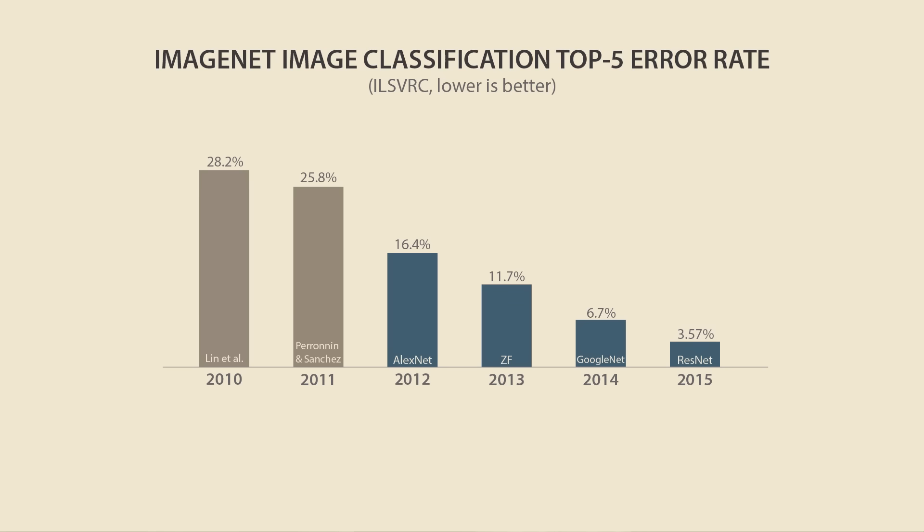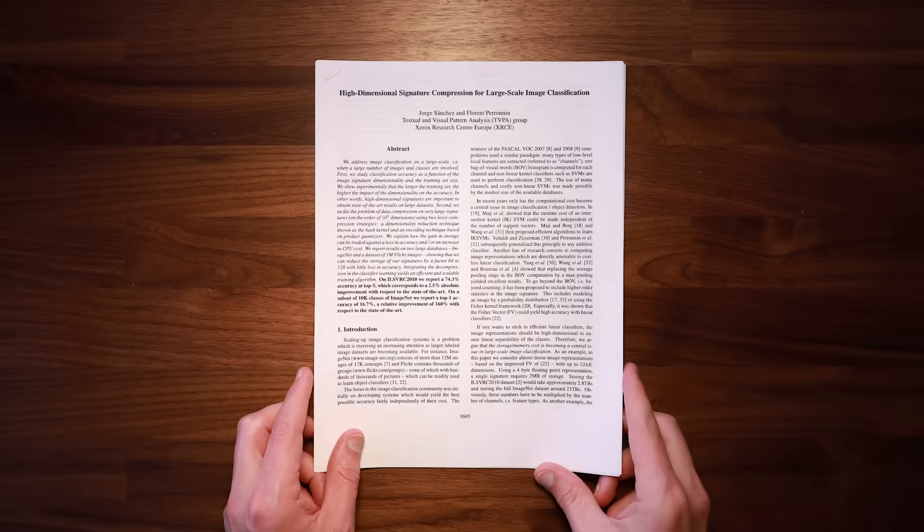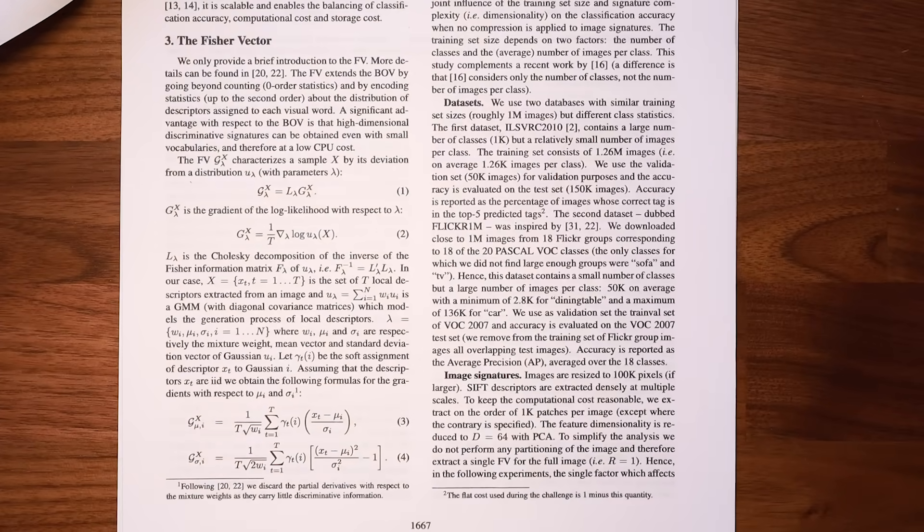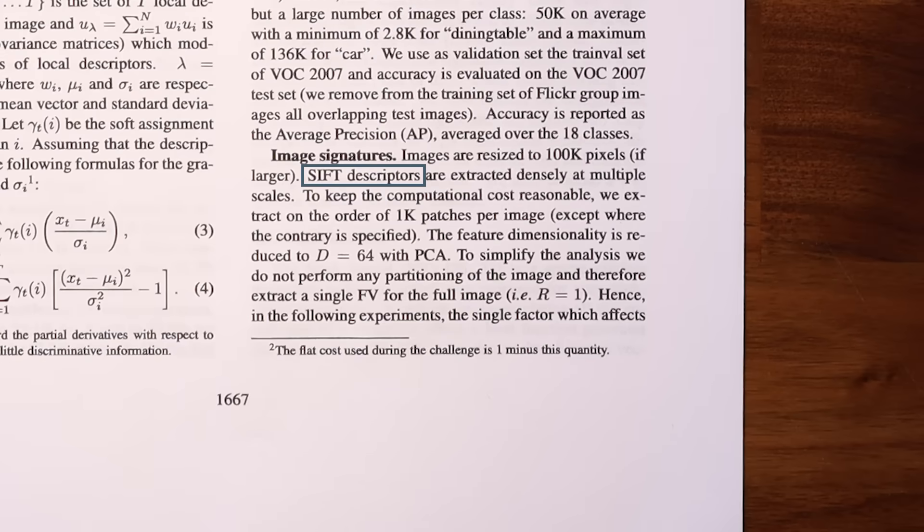AlexNet won the ImageNet Large Scale Visual Recognition Challenge by a wide margin in 2012, the third year the challenge was run. In prior years, the winning teams used approaches that under the hood look much more like what you might expect to find in an intelligent system. The 2011 winner used a complex set of very different algorithms, starting with an algorithm called SIFT, which is composed of specialized image analysis techniques, developed by experts over many years of research.